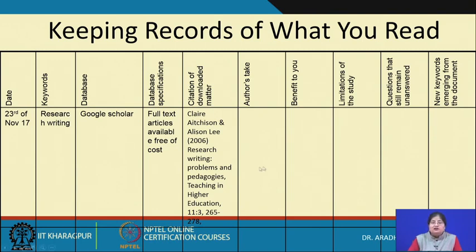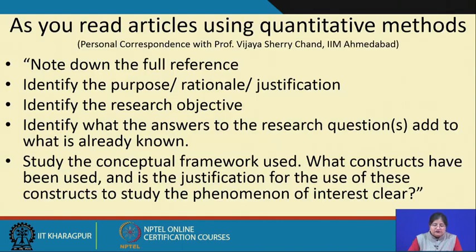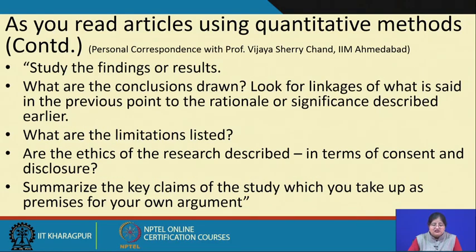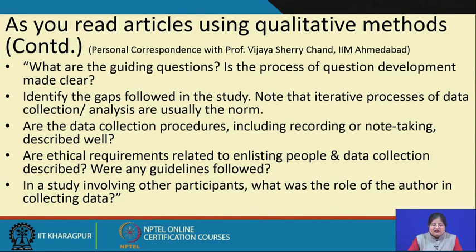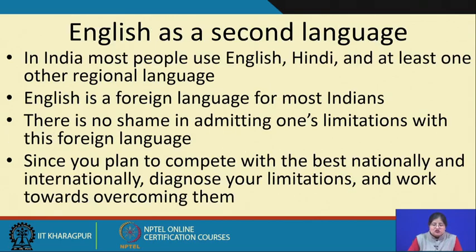We talked about language limiters and again about language limiters in the last set of slides covering mistakes, and we talked about euphemisms. Then we moved on to reviewing literature — what a literature review was, why you conduct one, some concerns to be careful of, and one method of keeping your records in place. Then we discussed some personal correspondence with a professor and senior mentor, and how you read articles using quantitative and qualitative methods. We also discussed the role of English when you start writing.